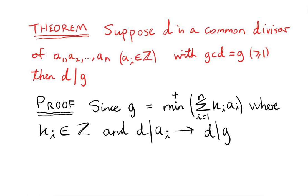Now we can get back to the theorem. We want to show that any common divisor d of a set of integers will divide the greatest common divisor g. We have shown that g is a linear combination of all the a's. If d is any common divisor of all the a's, clearly d will divide any linear combination of all the a's, so d will divide g.